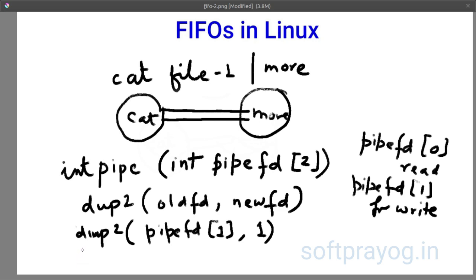Similarly, for the more process you do dup2 pipefd0 and 0. So here the standard input and pipefd0 mean the same file descriptor and so more process reads on 0 but actually it is reading on pipefd0 whereas cat process writes on standard output but actually it is writing on pipefd1.